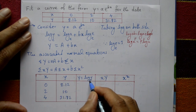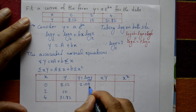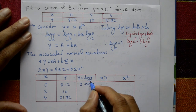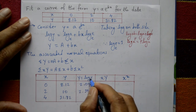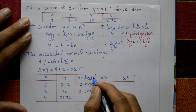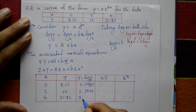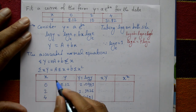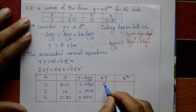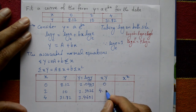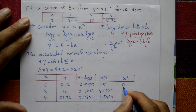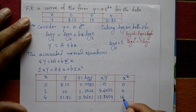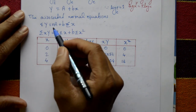Computing capital Y values: log(8.12) base e = 2.0943, log(10) base e = 2.3026, log(31.82) base e = 3.4601. Then x·Y values are: 0, 4.6052, 13.8404. And x² values are: 0, 4, 16.